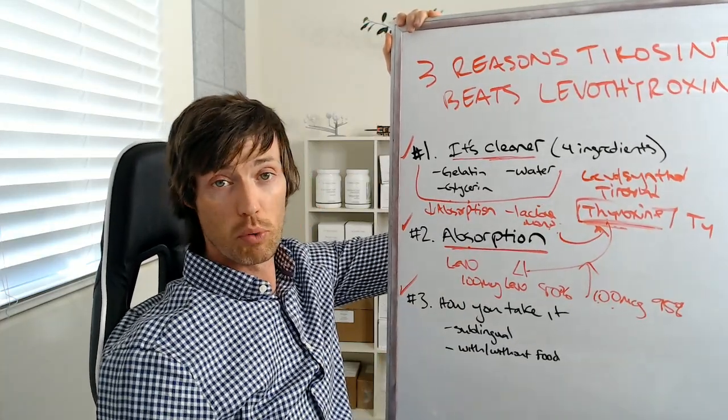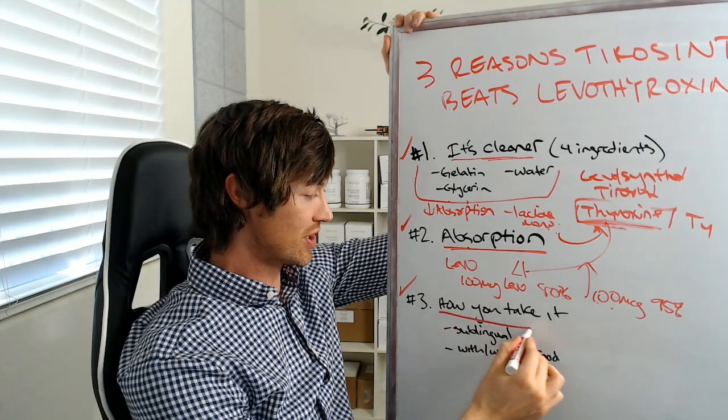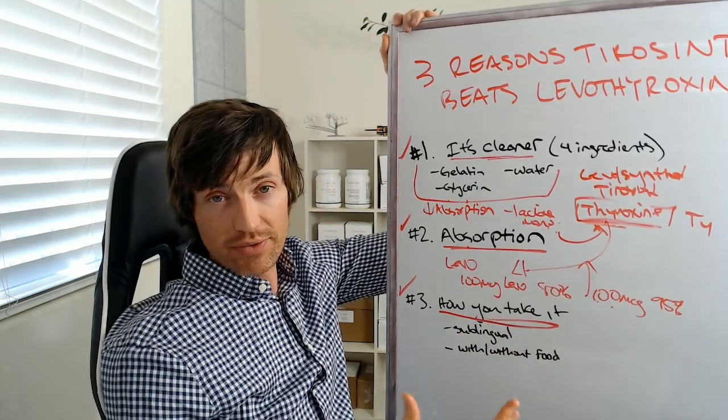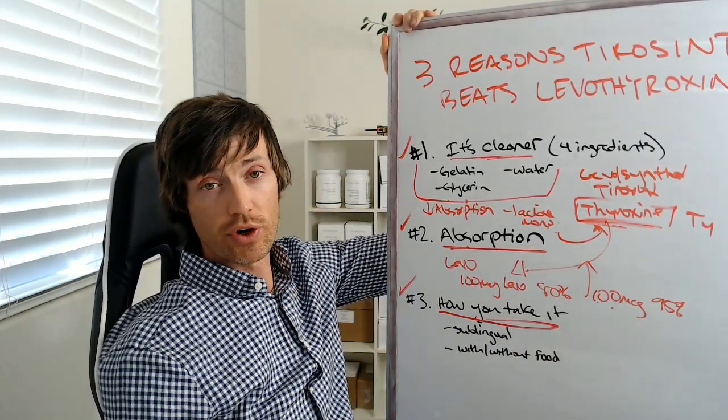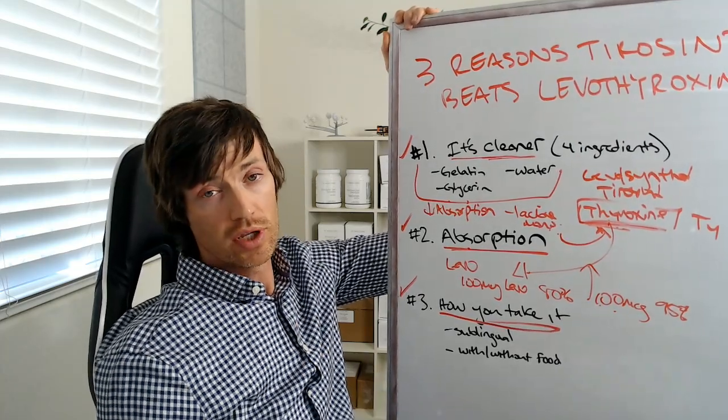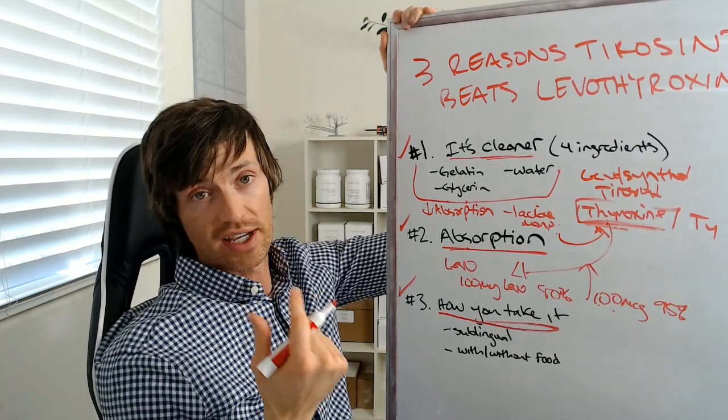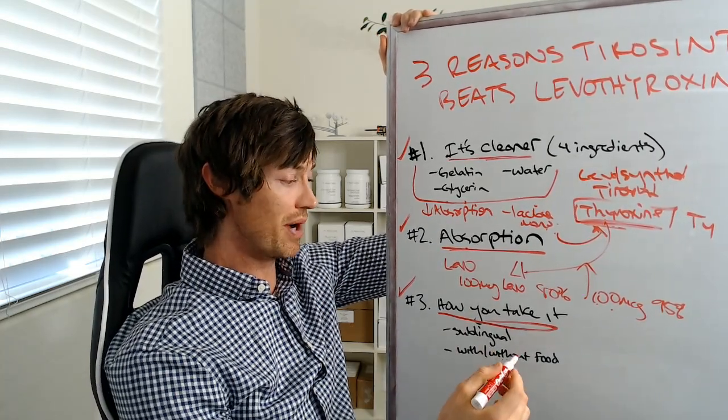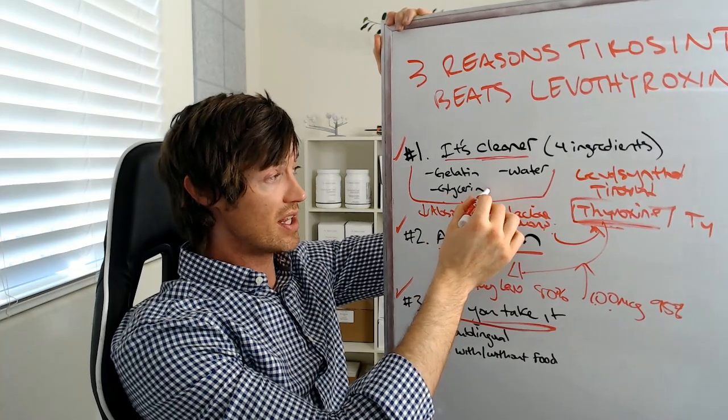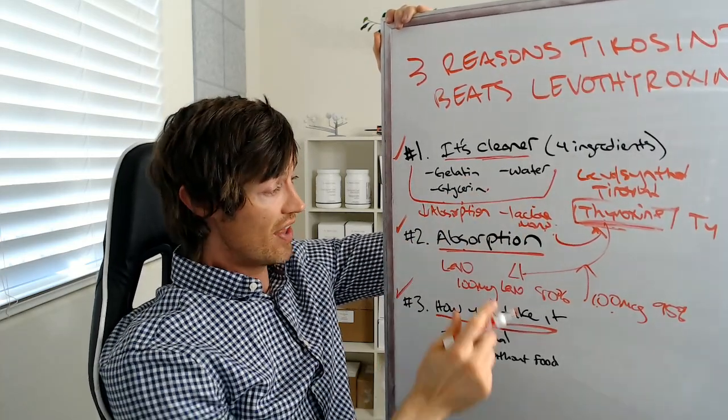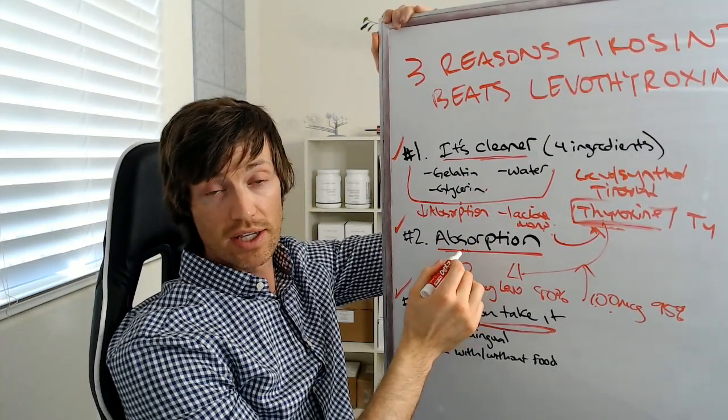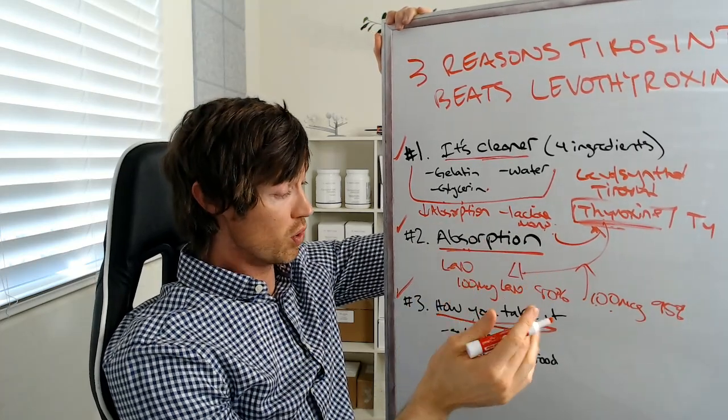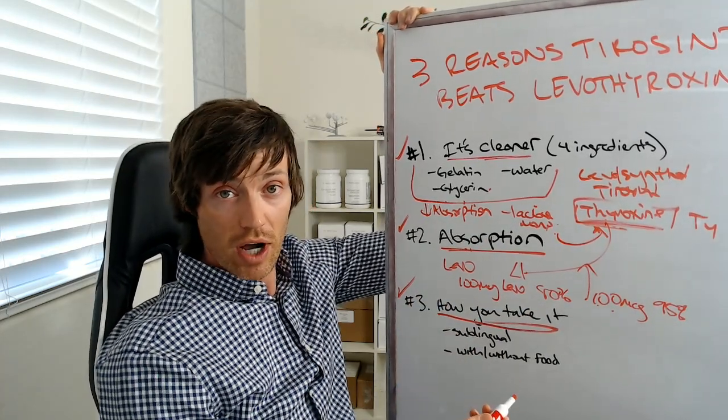And then lastly, another important thing to think about is how you actually take it. If you're taking Levothyroxine, there's a ton of rules regarding how you should take it. You can't take it with food. You need to take it away from certain supplements. You need to take it first thing in the morning. These are the recommendations that you're often given. Now, what's interesting though, is Tyrosyn by itself, by virtue of the inactive ingredients that are found in it, the fact that it's cleaner and the fact that it's much easier to absorb by the body, you can take it a couple of different ways.